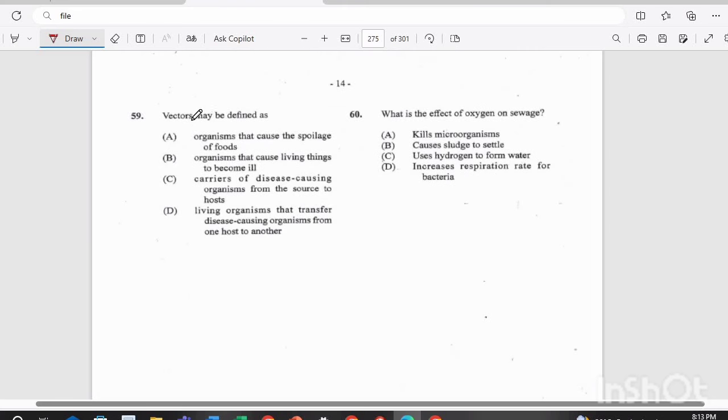Question 59. Vectors may be defined as A. Organisms that cause the spoilage of foods. B. Organisms that cause living things to become ill. C. Carriers of disease-causing organisms from the source to host. Or D. Living organisms that transfer disease-causing organisms from one host to another. What's the best answer there for a vector? Is D.